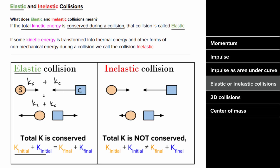If the total kinetic energy before the collision is equal to the total kinetic energy after the collision, then that collision is elastic. It's not enough for the system to just bounce off of each other. If two objects bounce, the total kinetic energy might not be conserved. Only when the total kinetic energy is conserved can you say the collision is elastic.